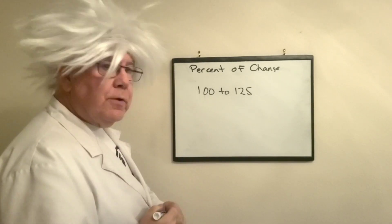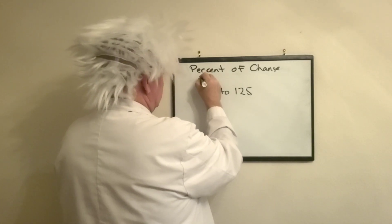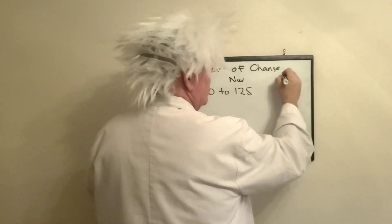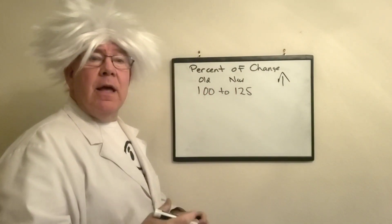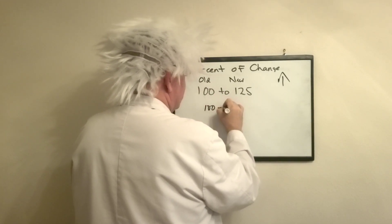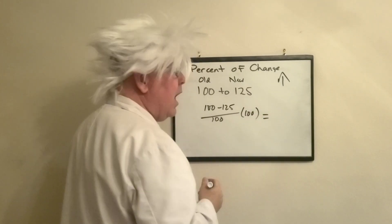Okay. First thing, is it an increase or a decrease? Well, if this is the old and this is the new, since the new is greater than the old, I know it's an increase. So now I'm going to do my math. I have 100 minus 125 over 100 times 100.